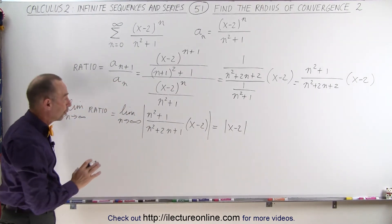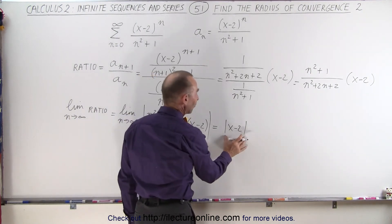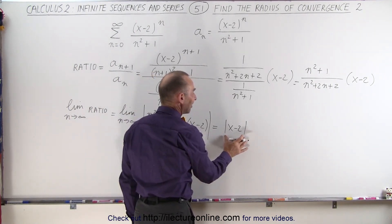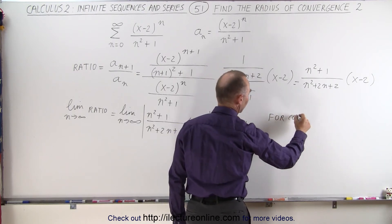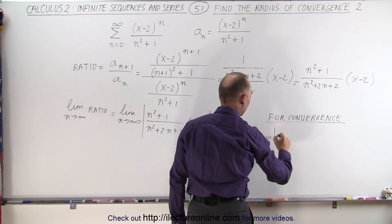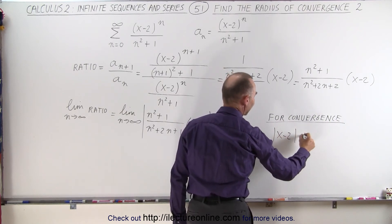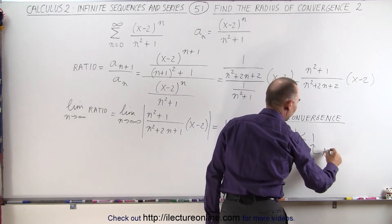Now, for this series to converge, it is required that this value, x minus 2, is less than 1. For convergence, we require that x minus 2 is less than 1, where this value 1 becomes the radius of convergence.